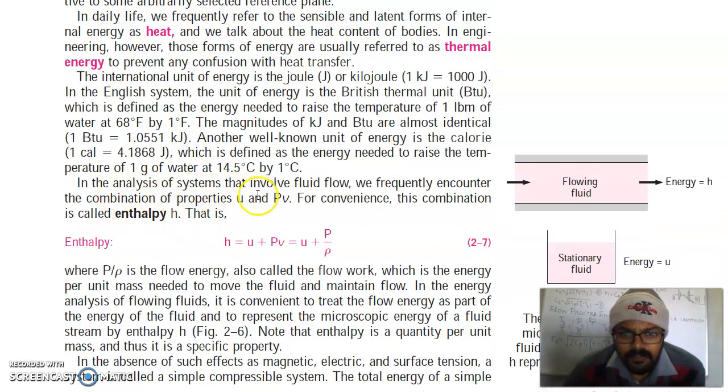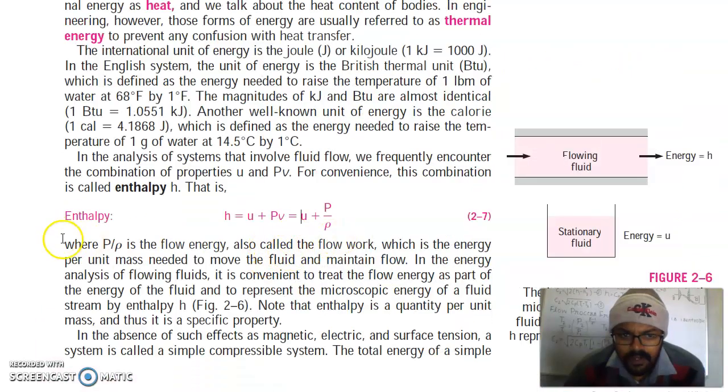In analysis of systems that involve fluid flow, we frequently encounter the combination of properties that is enthalpy and flow energy. Enthalpy equals internal energy plus flow energy, where the term P over rho is the flow energy, also called the flow work, which is the energy per unit mass needed to move the fluid and maintain flow. For example, in the energy analysis of flowing fluids, it is convenient to treat the flow energy as part of the energy of the fluid and to represent the microscopic energy of a fluid stream by enthalpy H.